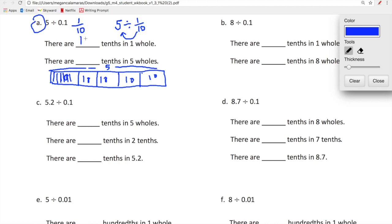There are blank tenths in one whole. I know that. There are ten tenths in one whole. You guys know a fancy way to rename one whole is just ten over ten, ten tenths. There are blank tenths in five wholes. If we have five wholes, how many tenths do we have in five wholes? We're going to have 50 because we have fifty tenths in five wholes.